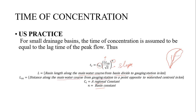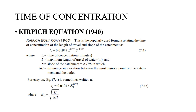We find the watershed centroid — let's say the centroid lies here. The point will be on the main water course, so LC is the distance from the gauging station to that point, and L is the entire length from basin divide to gauging station. That's how you measure the time of concentration.